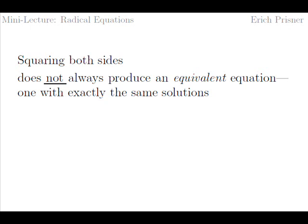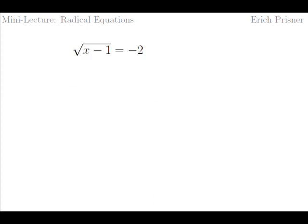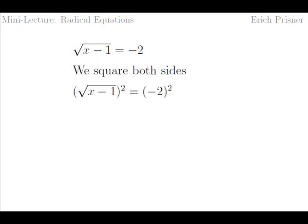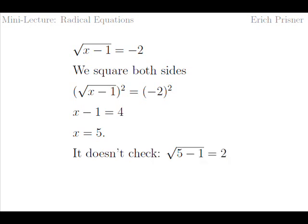But it is not, at least not always. The reason is that the square function is not a one-to-one function. After squaring two expressions, left and right might be equal even if the initial ones were not. The squares of two and negative two are equal, but two is not equal to negative two. Look at the example: square root of x minus one equals negative two. Squaring both sides we get x minus one equals four, or x equals five — the same solution as the previous example. But x equals five is not a solution of the equation square root of x minus one equals negative two, since the square root of four equals two and not negative two.